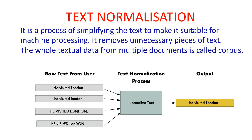The term corpus will appear in many places in my videos — don't get confused. It is a one-marker question: when we combine the textual data from multiple documents, it is known as corpus. So text normalization is basically simplifying the text, removing irrelevant pieces, so that a lesser amount of data is fed to the machine.